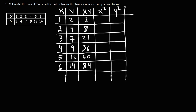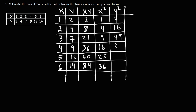Moving on to the x squared column, we square the values in the x column: 1 squared is 1, 2 squared is 4, 3 squared is 9, 4 squared is 16, 5 squared is 25, 6 squared is 36. For y squared, we square the y column values: 2 squared is 4, 4 squared is 16, 7 squared is 49, 9 squared is 81, 12 squared is 144, and 14 squared is 196.